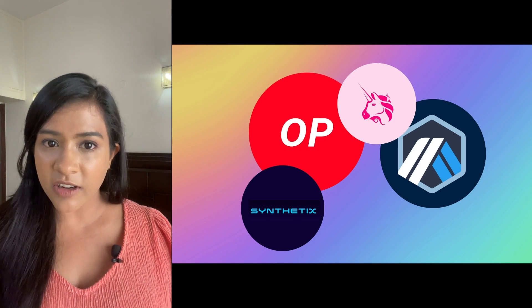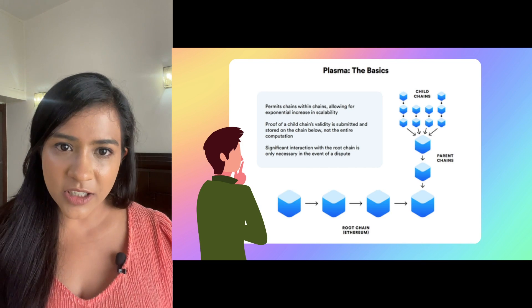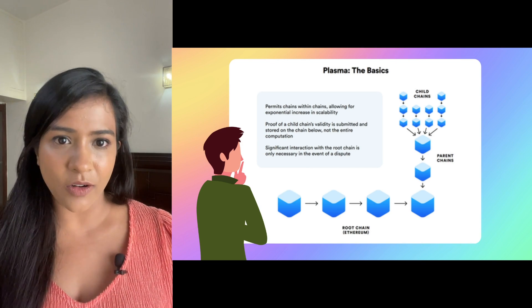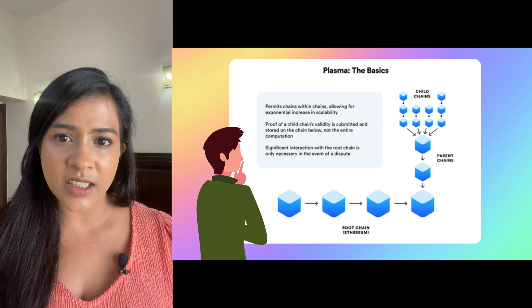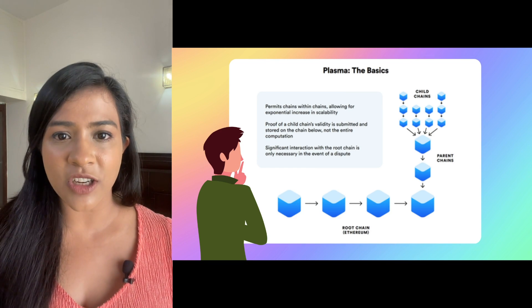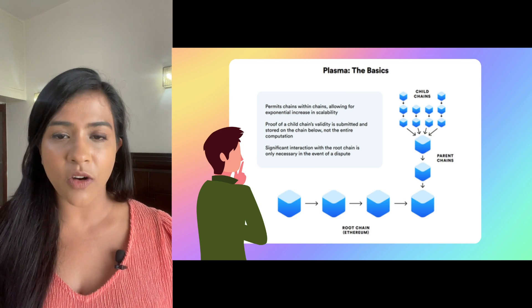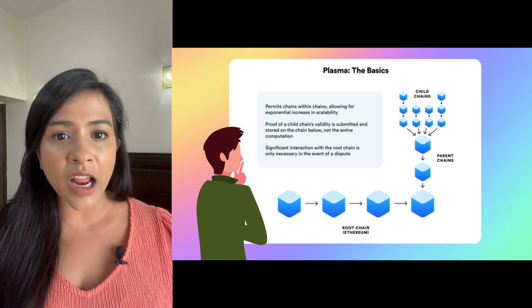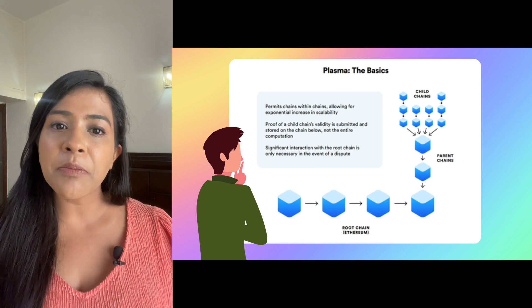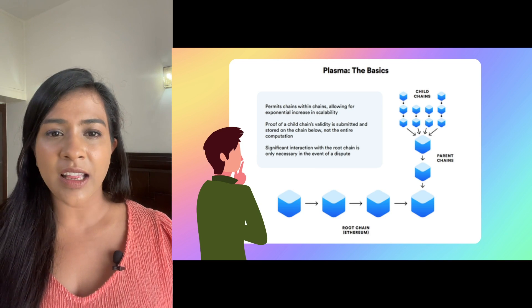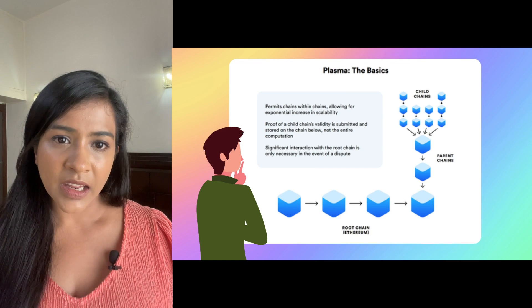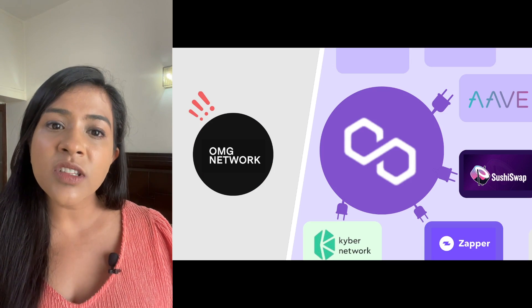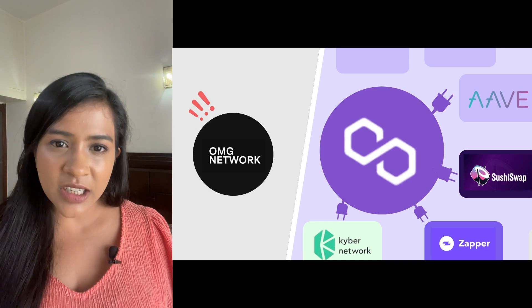Coming to the next category of scaling solutions: plasma chains. The main idea of plasma is to create a framework like a blockchain tree of small blockchains called child chains or plasma chains, connected to the main chain in a hierarchical order. The idea of plasma scaling was first introduced by Vitalik Buterin in 2017, and many iterations have been made over the years, like Plasma Cash and Minimum Viable Plasma.